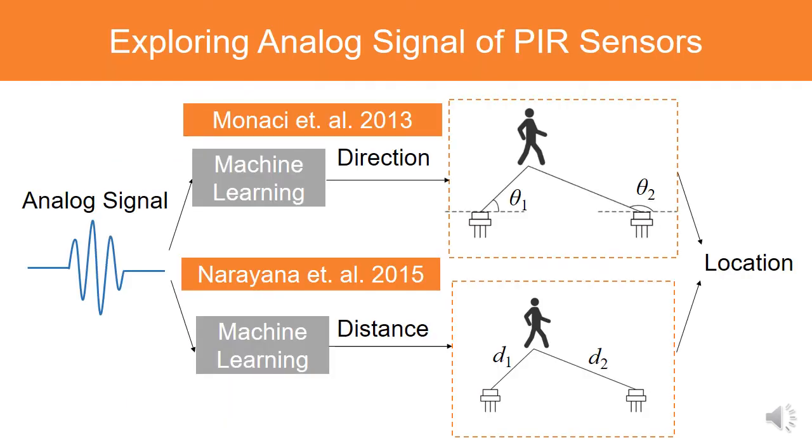To reduce the deployment density, a new trend is to deeply explore the analog signal of the PIR sensors. For example, some researchers propose to utilize a machine learning model to map the amplitude of a PIR sensor's analog signal to the direction or distance of a person for localization.